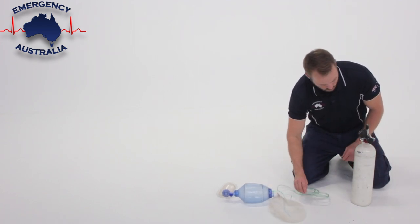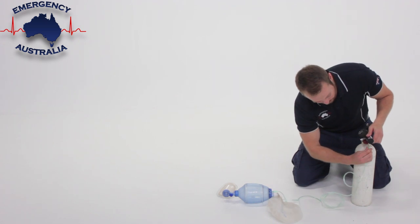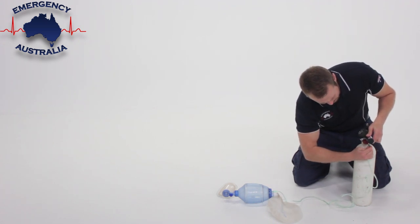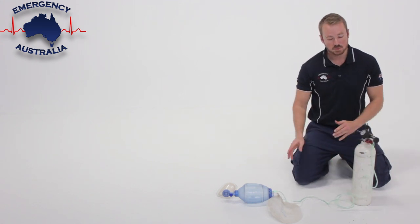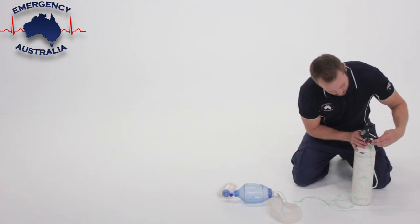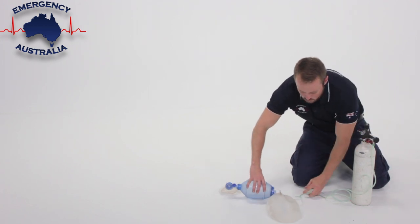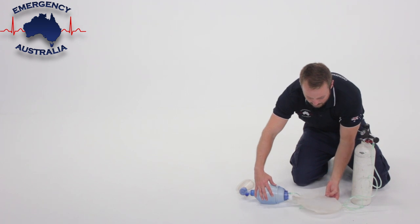Connect the O2 tubing, select the desired flow rate—15 liters per minute for this BVM—and you should start to see your reservoir bag inflate.